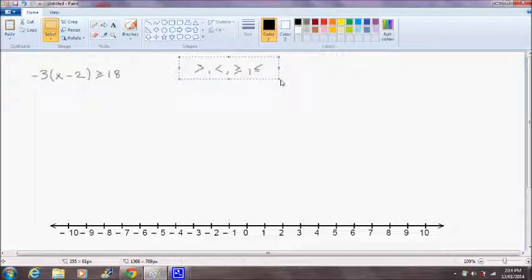The example I'm going to work with is already written: negative 3 times x minus 2 is greater than or equal to 18, and I want to find all possible solutions for x that will satisfy this inequality.